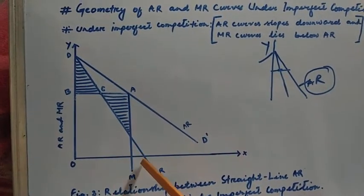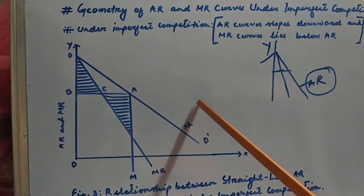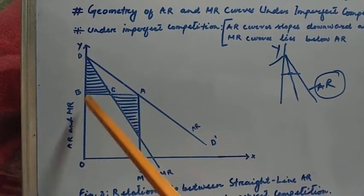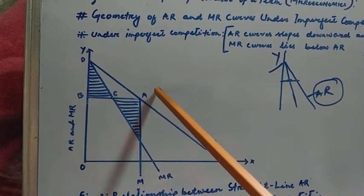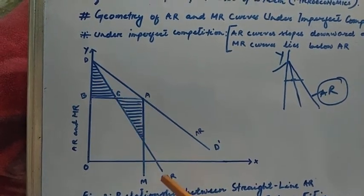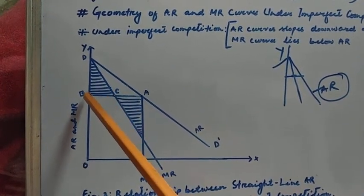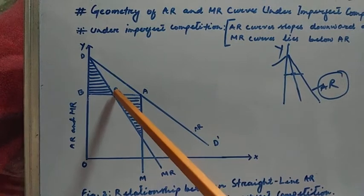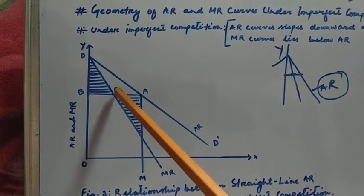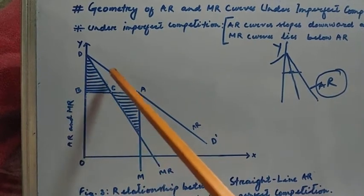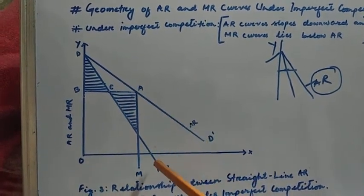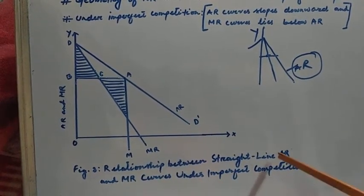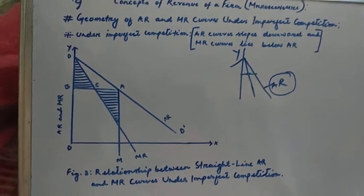To draw an MR curve when AR is given: first draw a perpendicular line between AR and the Y-axis, then ensure the MR curve passes through the midpoint of that perpendicular line AB — meaning point C must be the midpoint, so AC equals BC. Figure 3 shows this relationship between the straight line AR and MR curve under imperfect competition.